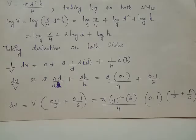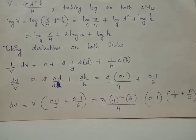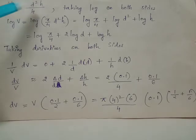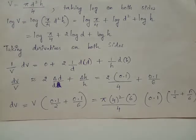Let us discuss an alternate solution for evaluating error in measurement of volume and lateral surface of the right circular cylindrical can, without depending on the concept of differentials. Since we have volume V = πd²h/4, when you take log on both sides you get log V = log(π/4 × d² × h).